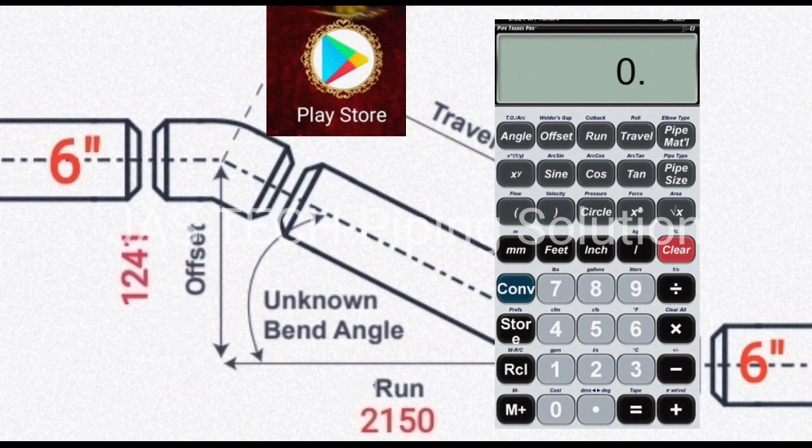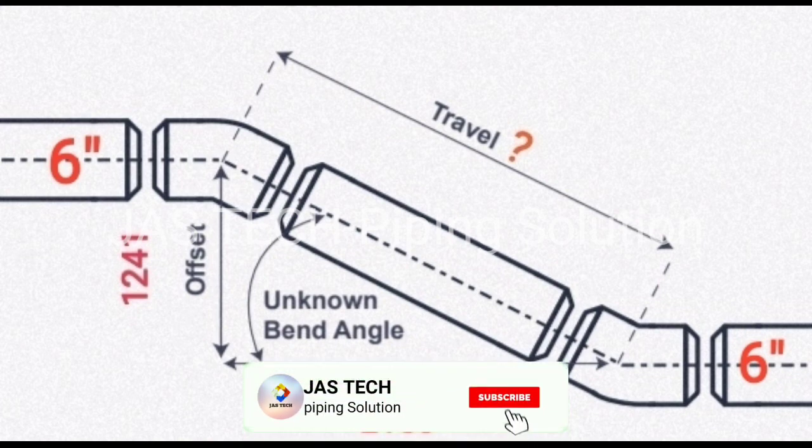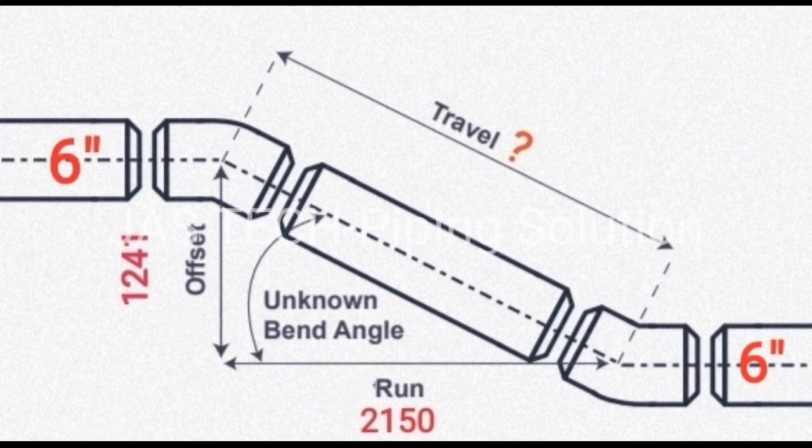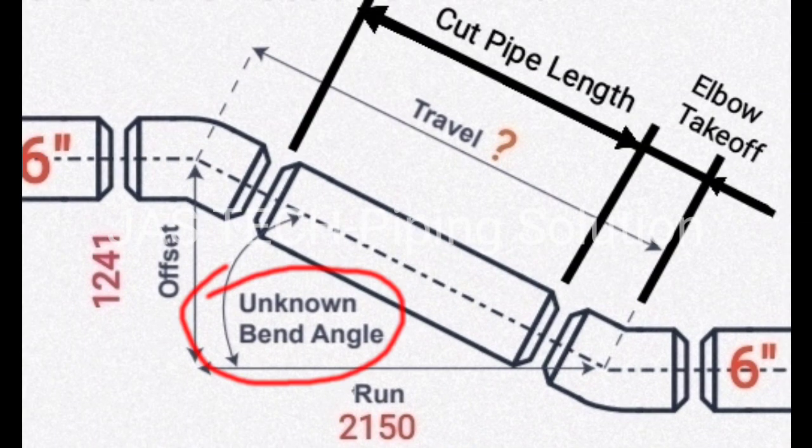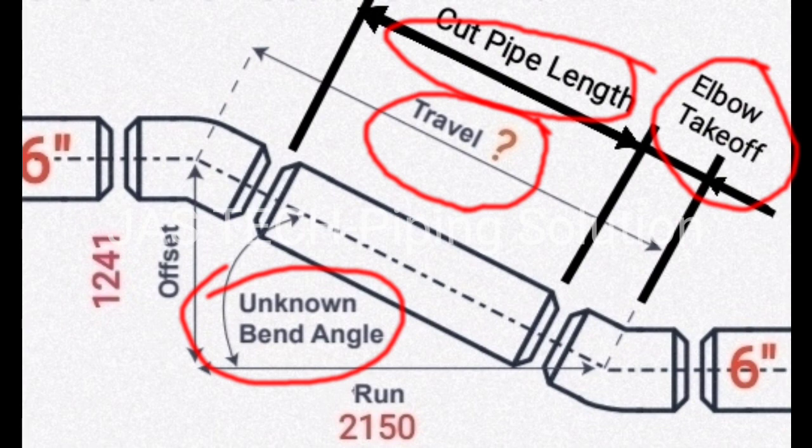This app is available in Play Store. As per our drawing, 6 inch pipe spool, run 2150 and offset 1241 mm to find out unknown bend angle, travel distance, elbow takeoff and cut pipe length.